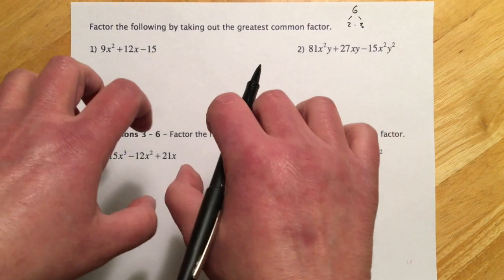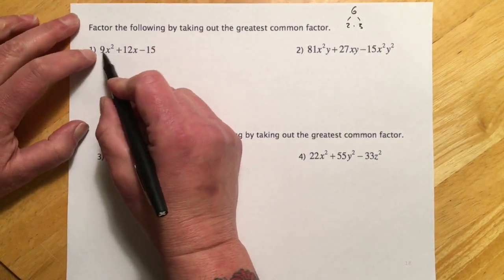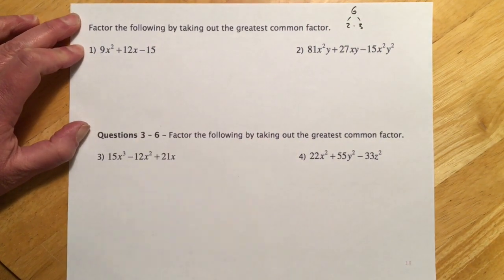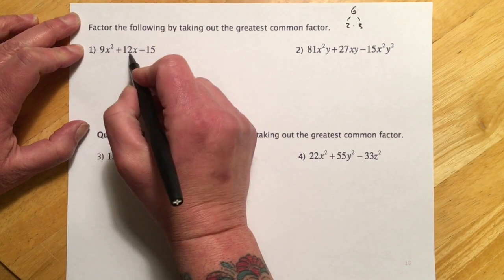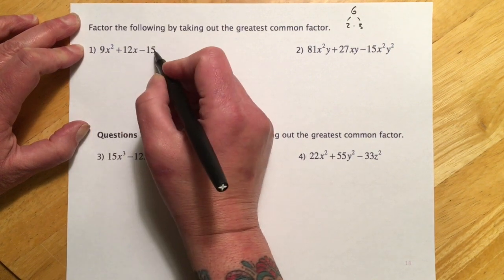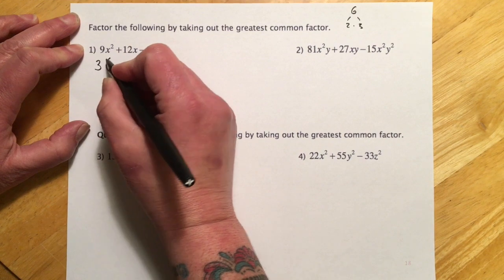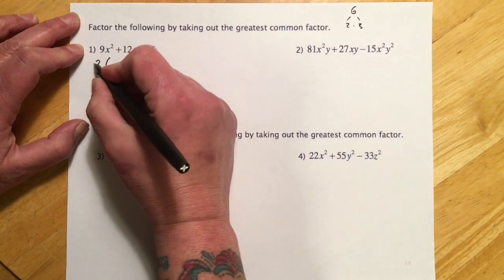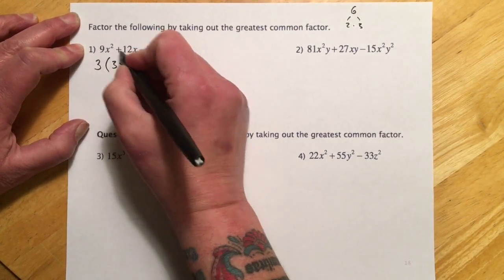So last section we were multiplying; this section we're trying to get it broken down into the pieces it would multiply from. For greatest common factors, we look at three terms and ask: do all three terms have anything in common? The last term doesn't have an x, so x is out of play. I look at the numbers — nine, twelve, fifteen — and three would be the biggest number that divides into all of those. If I take a three out front, I figure out what three times something gives me back nine x squared.